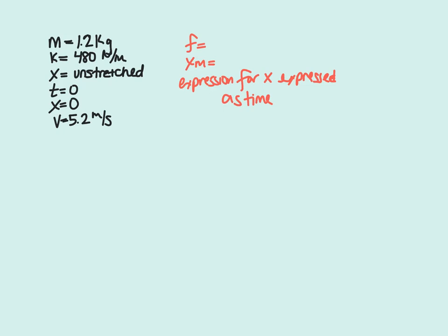For the first part, finding the frequency, we're going to use the equation frequency equals one half the square root of the spring constant over the mass.